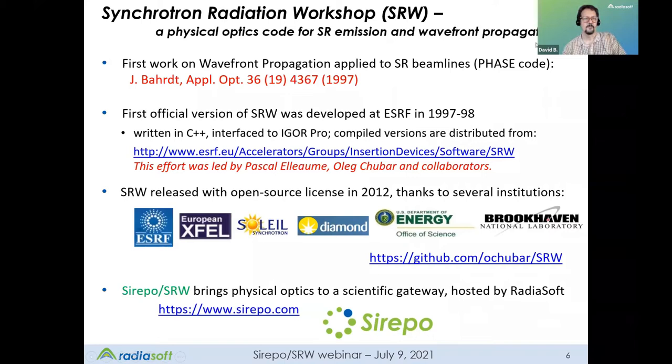So SRW, Synchrotron Radiation Workshop. This is a physical optics code. It's a state-of-the-art code for calculating synchrotron radiation emission and also for calculating wavefront propagation, in particular for x-ray optics with a lot of capabilities for detailed and accurate treatment of many x-ray optics elements. So SRW was based on work that was published in 1997 by BART, and there was an associated code called PHASE. In that year, in the following year, Pascal Elom and Oleg Chubar and collaborators developed SRW. It was written in C++. The original interface was to Igor Pro, which is a commercial software application.